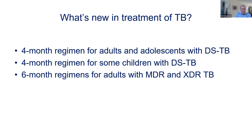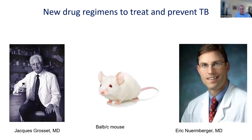For the first time in a long time, there is a lot that's new just in the last year or so. There's now a four-month regimen for adults and adolescents with drug-susceptible TB, a four-month regimen for children, and a six-month regimen for multi-drug-resistant and extensively drug-resistant TB.